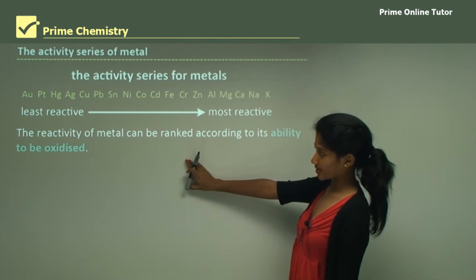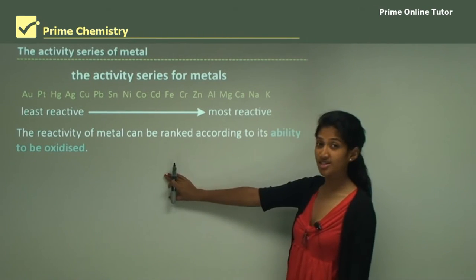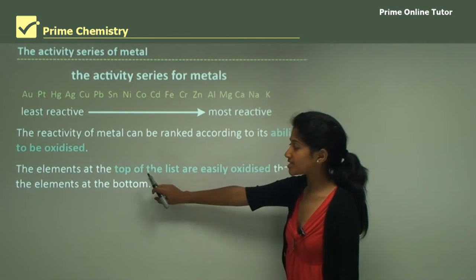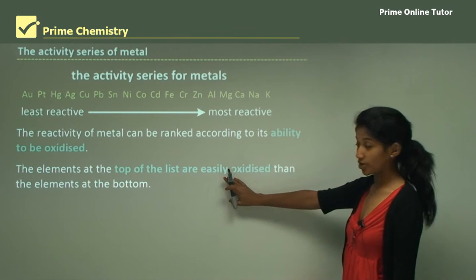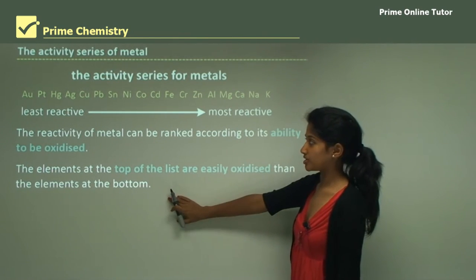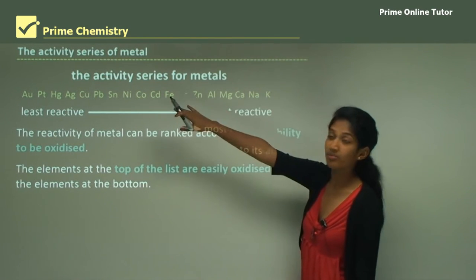The reactivity of metals can be ranked according to their ability to be oxidized, in other words to lose electrons. The elements at the top of the list are more easily oxidized than the elements at the bottom.